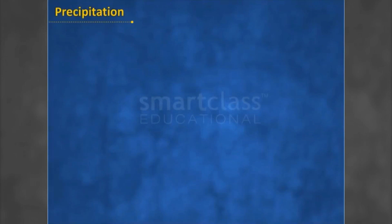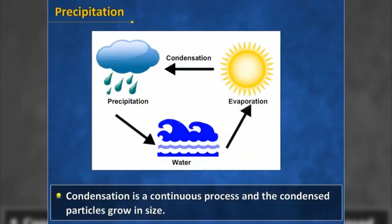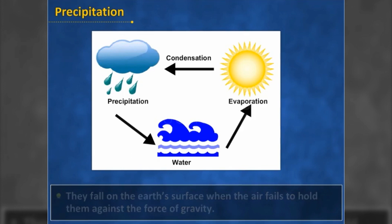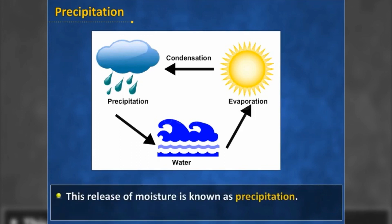Precipitation: condensation is a continuous process and the condensed particles grow in size. They fall on the earth's surface when the air fails to hold them against the force of gravity. This release of moisture is known as precipitation.